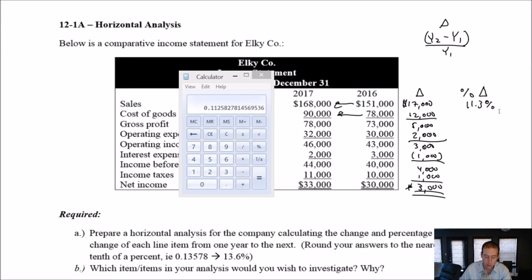Our cost of goods sold grew from 78 to 90. It grew by 12,000. We divide by the earlier year, 78,000. Our cost of goods sold grew by 15.4%. So now actually we've got something interesting to go on. This is already interesting to me, and this isn't good news.